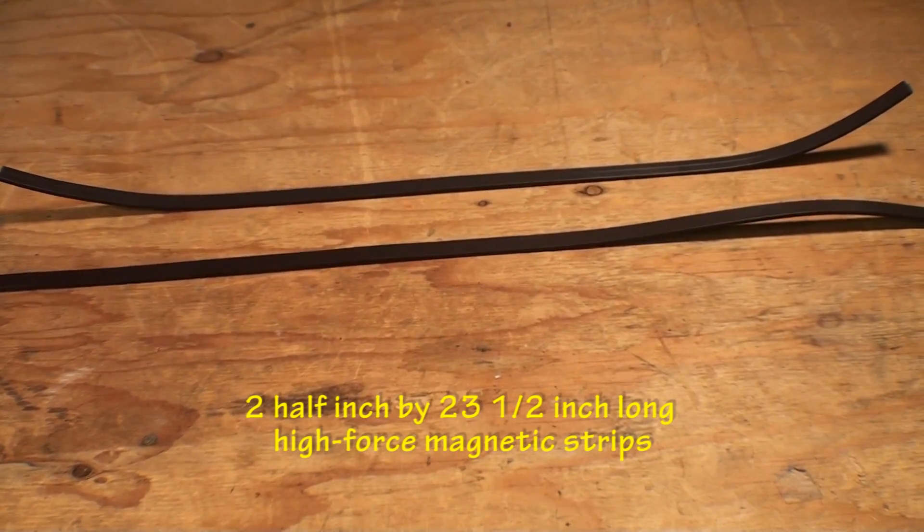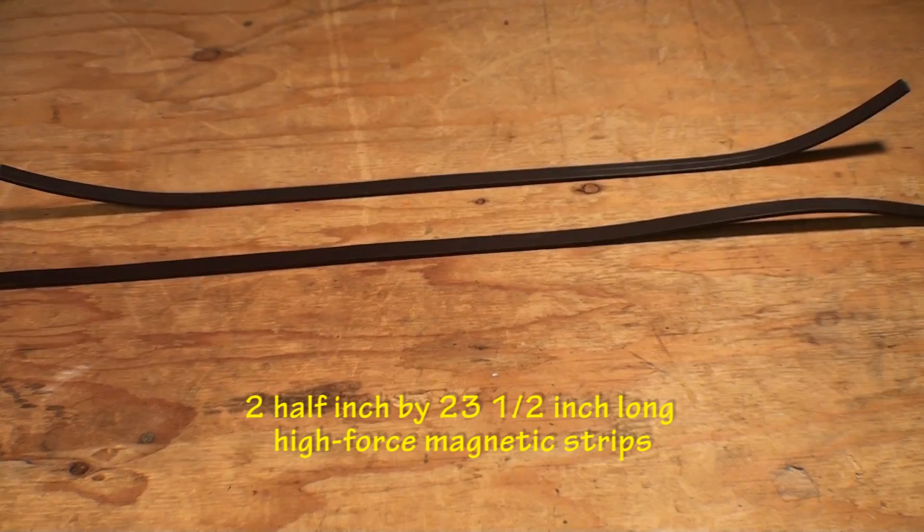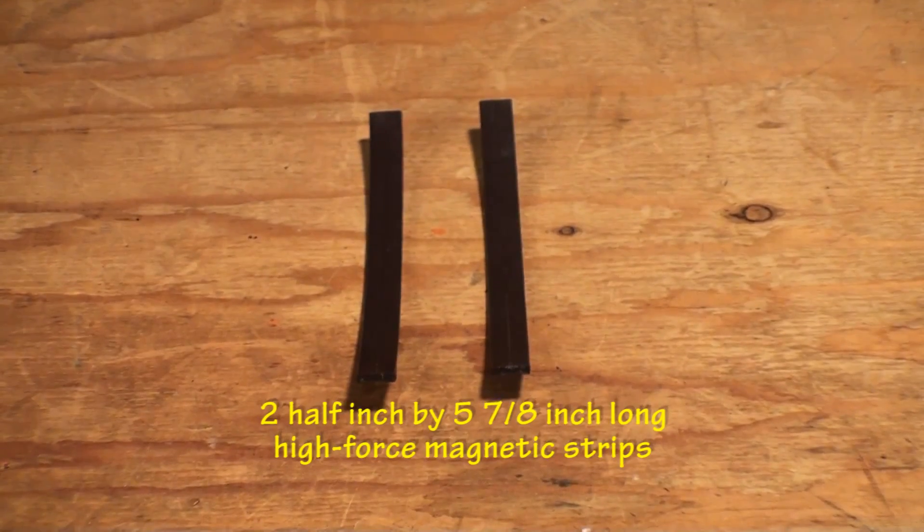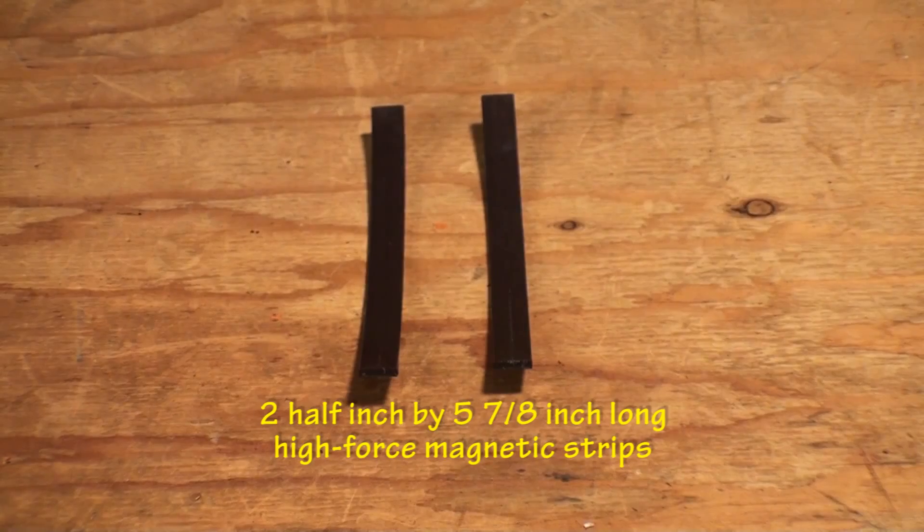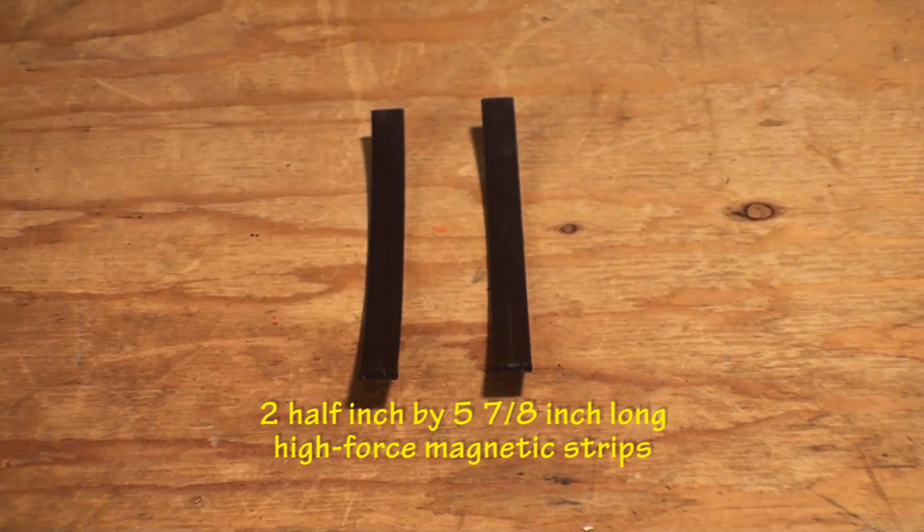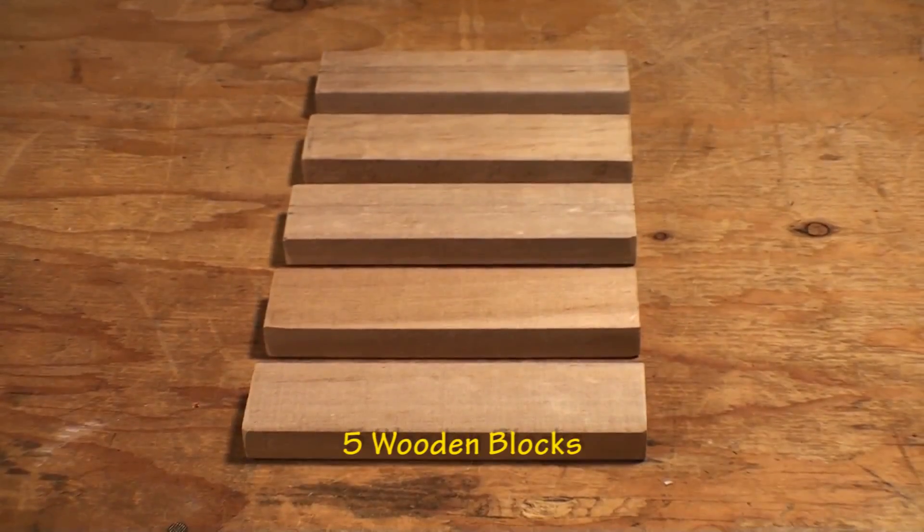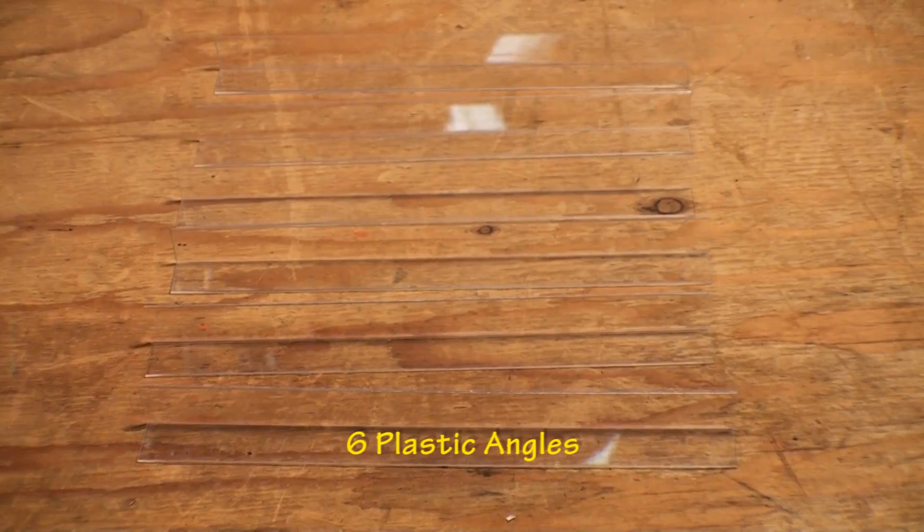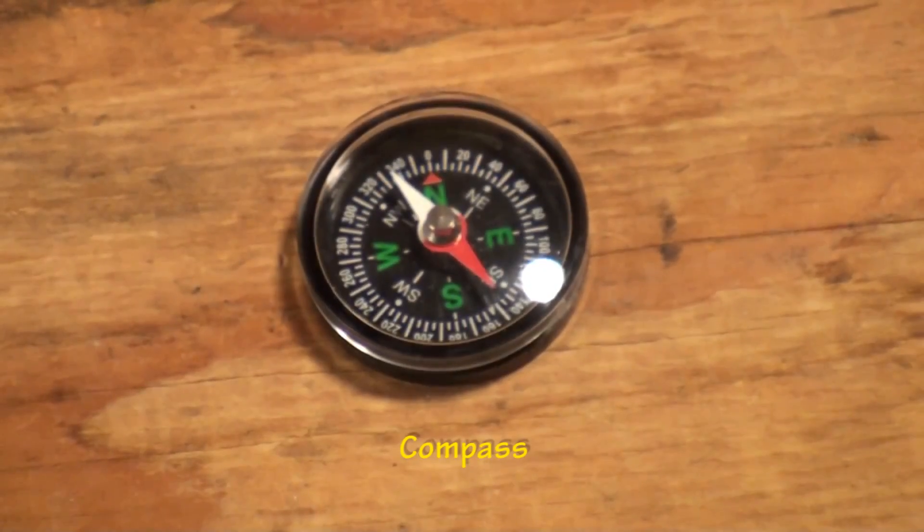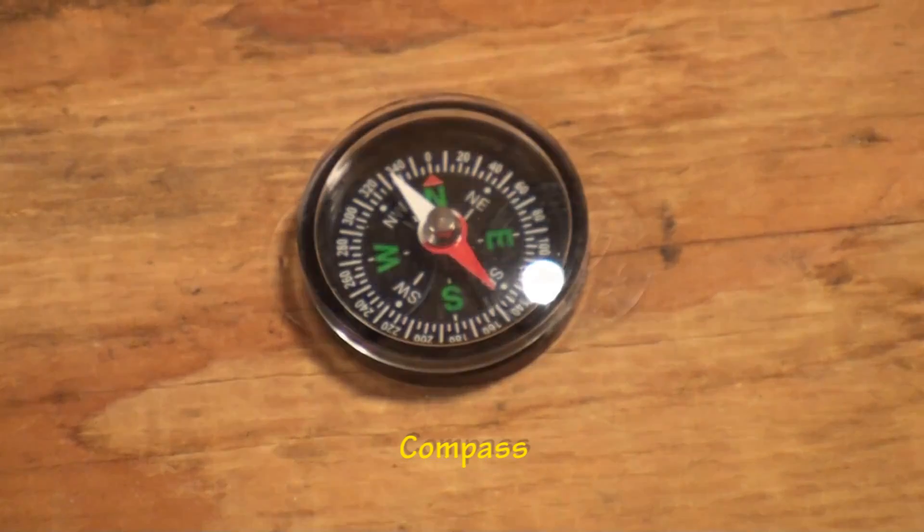half inch by 23 and one half inch long high force magnetic strips, two half inch by five and seven eighths inch long high force magnetic strips, five wood blocks, six plastic angles, and a compass. The household items you